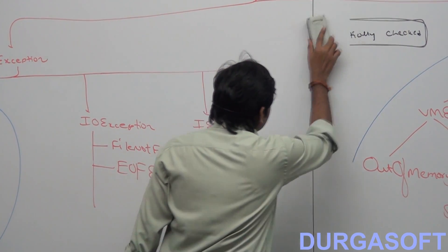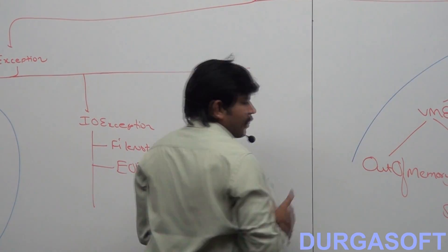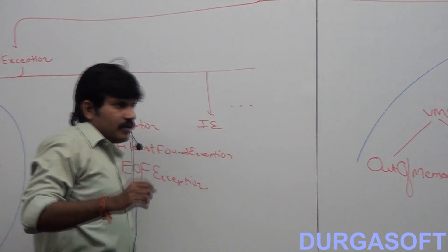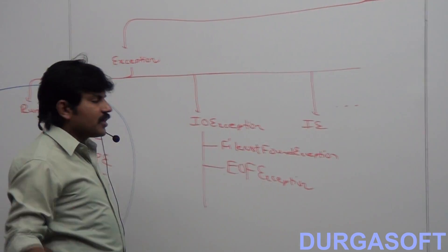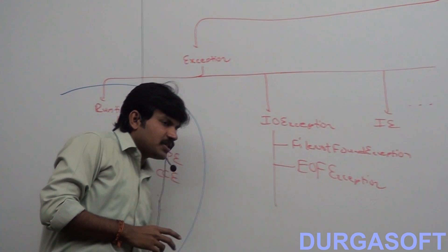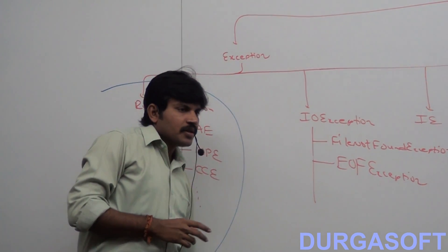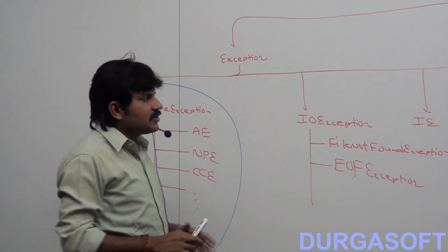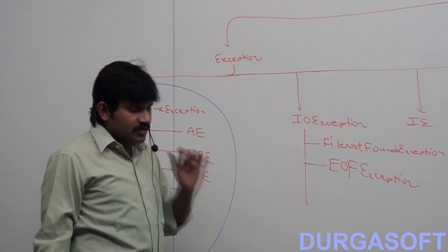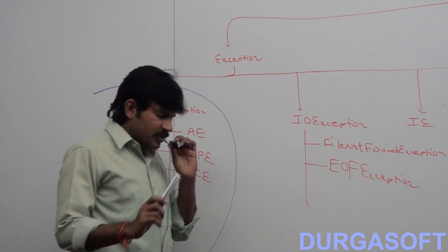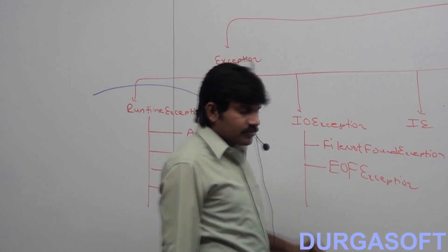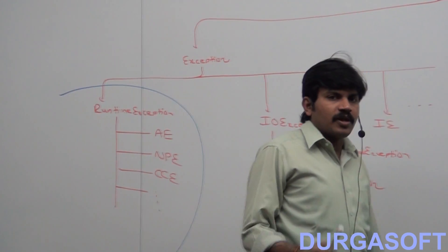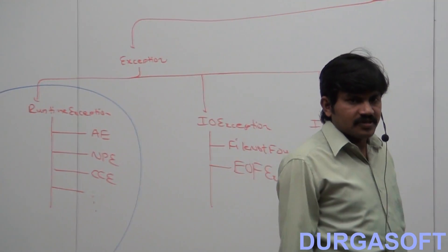Now, when we say that a checked exception is said to be fully checked, or a checked exception is said to be partially checked — let me explain with a small analogy.